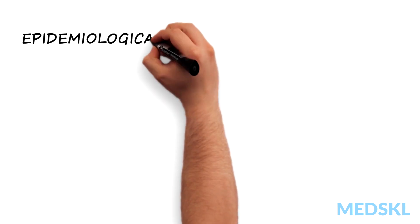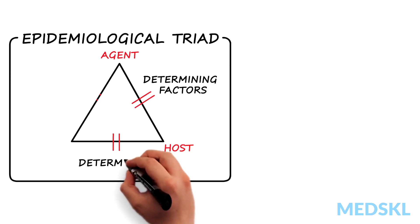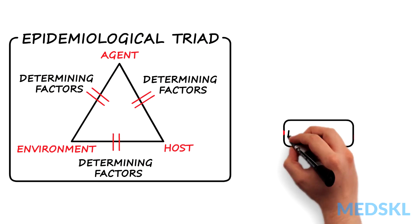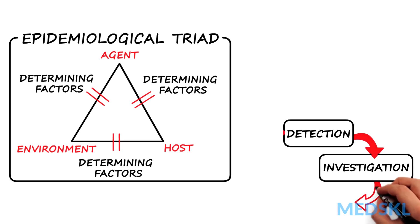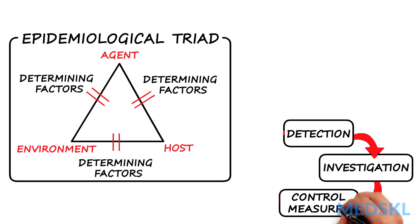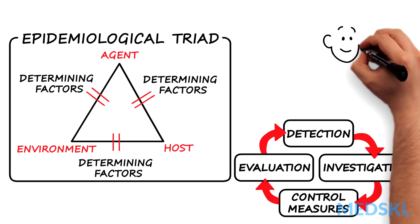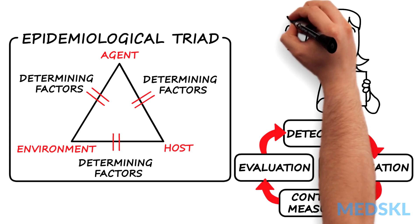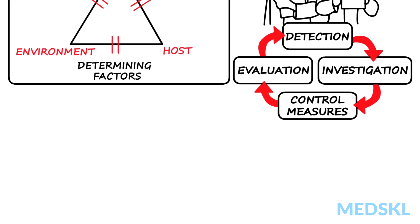The epidemiological triad can be used to investigate how the outbreak happened and then to plan control measures. Once implemented, control measures are evaluated. The surveillance system may be used to provide evaluation data — for instance, it can show if the number of cases has gone back to normal levels.